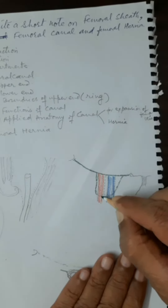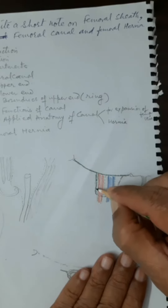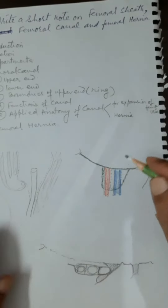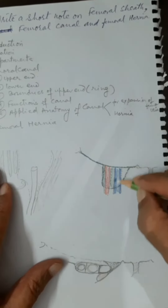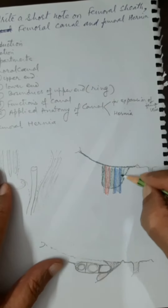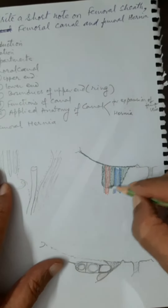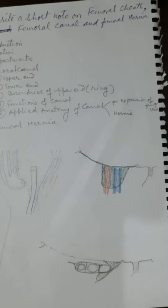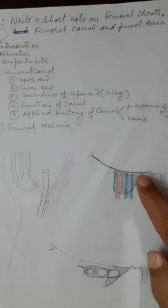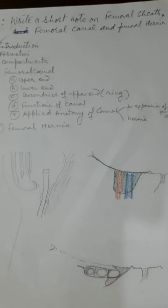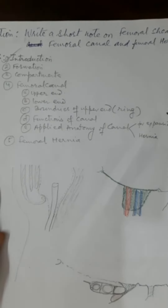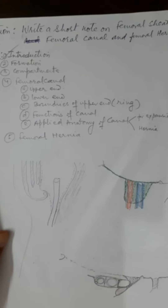The fascial sleeve covers the initial three and a half to four centimeters of both vessels. Its lateral wall is straight but its medial wall is oblique. It covers the vessels completely from anterior and posterior aspects because it is a sleeve. This fascial sheath covering the initial part of the femoral vessels is the femoral sheath.